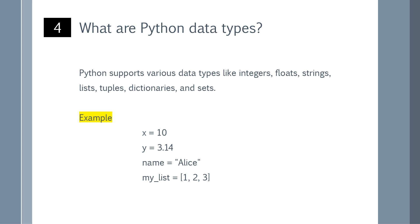What are Python data types? Python supports various data types like integers, floats, strings, lists, tuples, dictionaries, and sets. You can refer to the example shown on the screen.